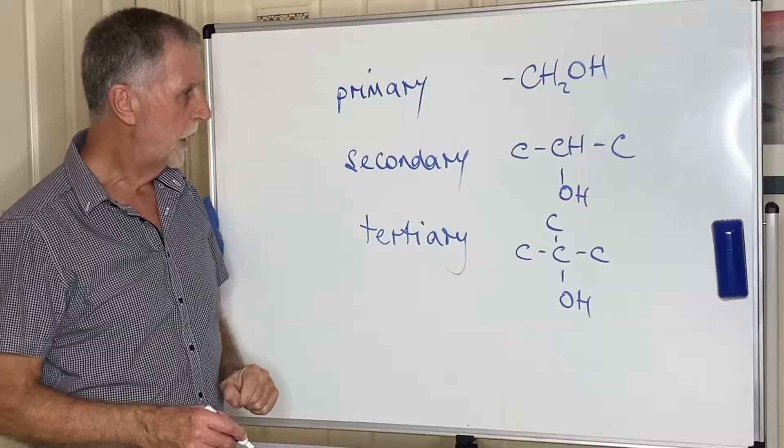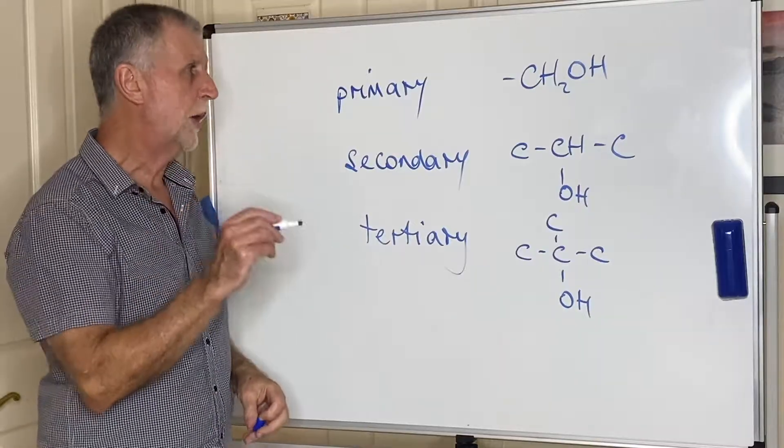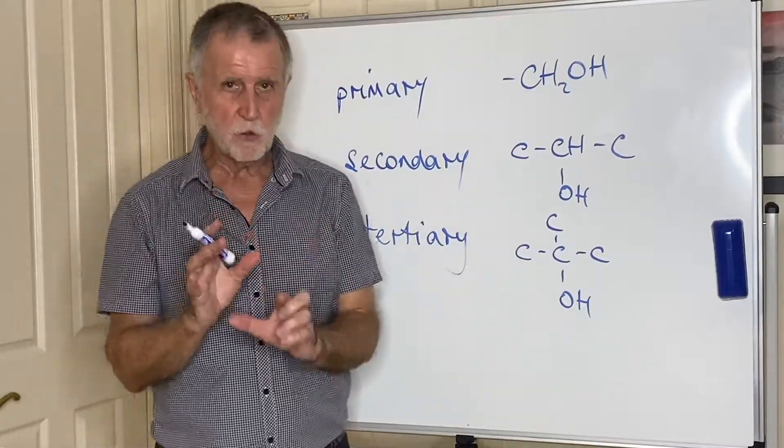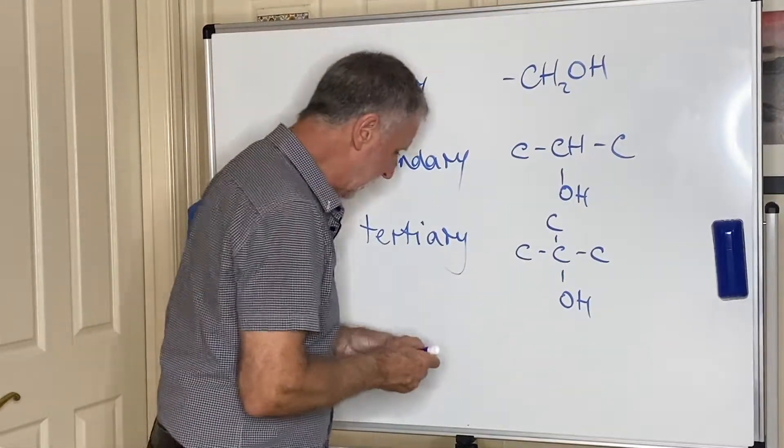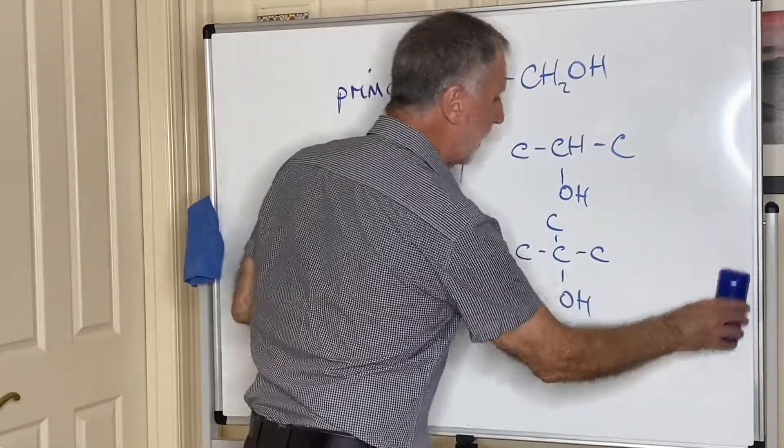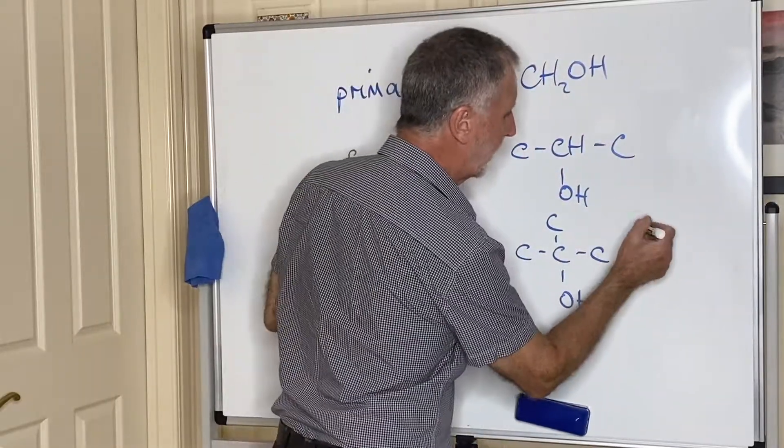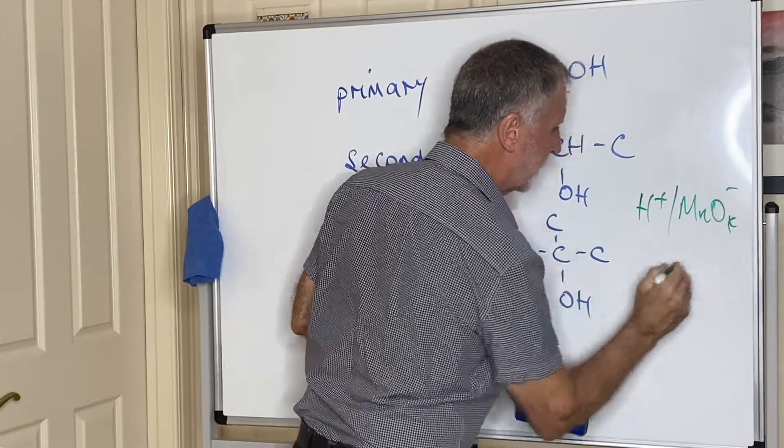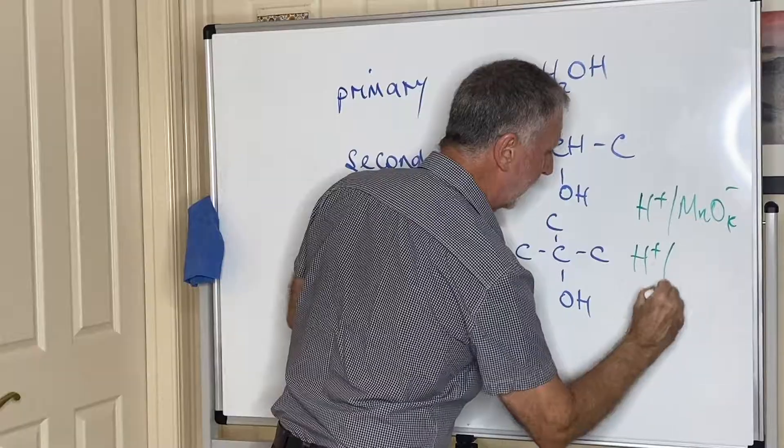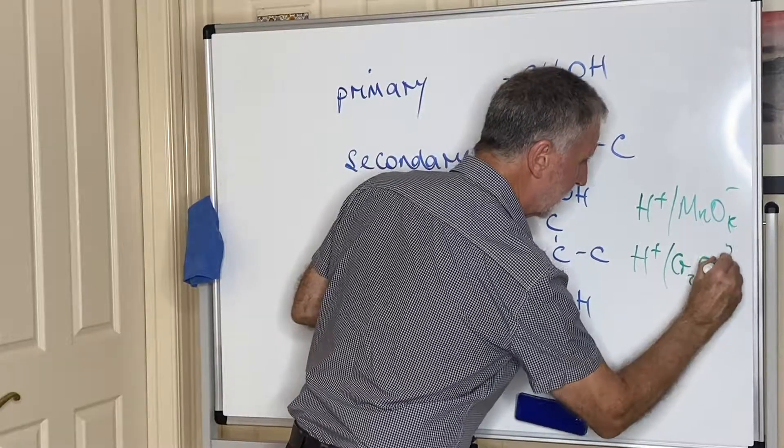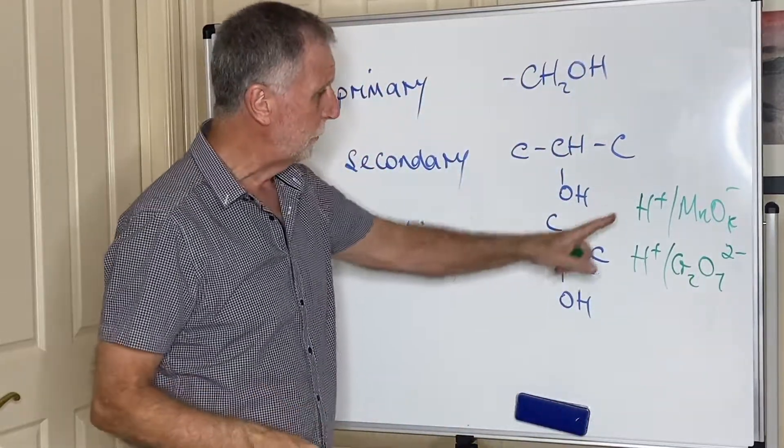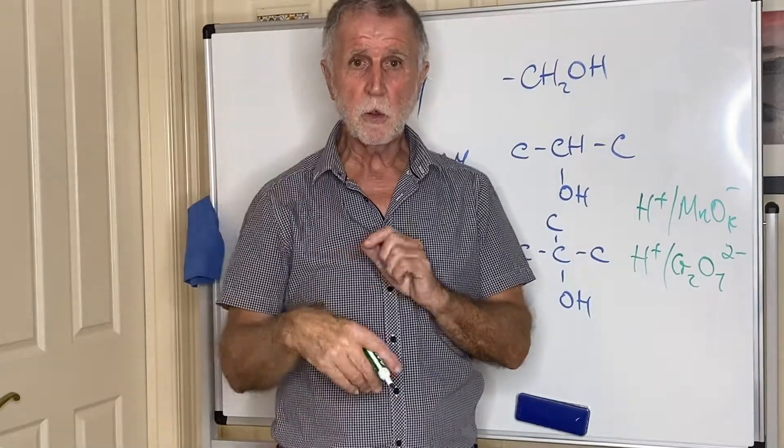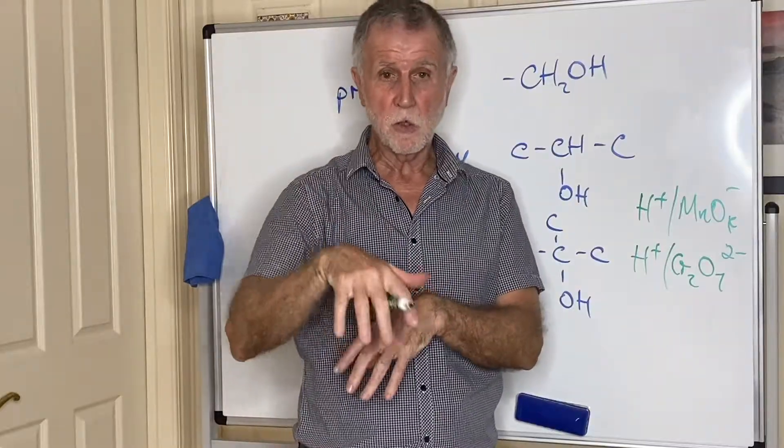Now when you try and oxidize these three different alcohols they behave differently. The common oxidizing agent that we use is either acidified manganate H+ MnO4- or acidified dichromate, and if you ever need the half equations for these they're on page 10 of the data book quite close to the bottom because the oxidizing agents are close to the bottom, the good oxidizing agents.